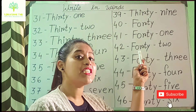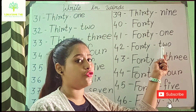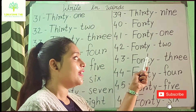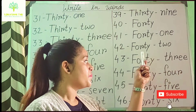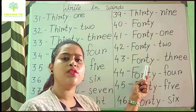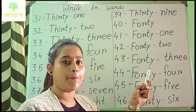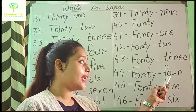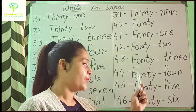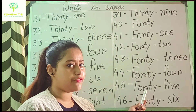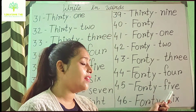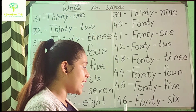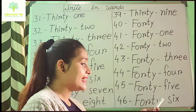For 42, F-O-R-T-Y then 2 is T-W-O. For 43, F-O-R-T-Y then 3 is T-H-R-E-E. First write the 40 spelling then the unit — it is the easiest way to remember. For 44, F-O-R-T-Y then 4 is F-O-U-R. For 45, F-O-R-T-Y then 5 is F-I-V-E.